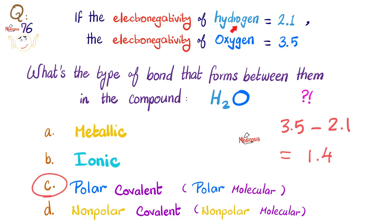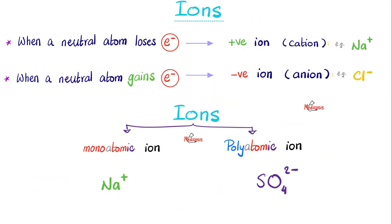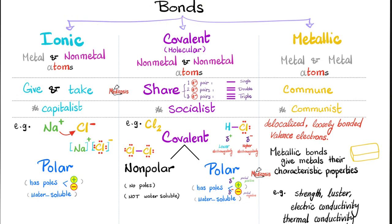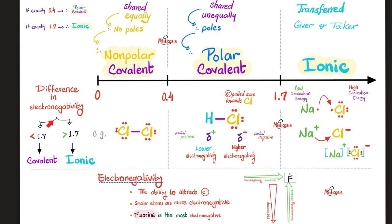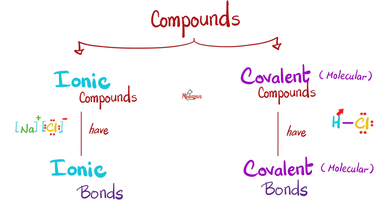Water is polar because the ability of oxygen to pull electrons towards it exceeds that of hydrogen, creating poles. When you lose a negative electron, you become a positive ion; when you gain one, you become a negative ion. Covalent compounds can be nonpolar or polar, but ionic compounds are always polar. Nonpolar covalent: delta 0–0.4; polar covalent: 0.4–1.7; ionic: 1.7 or higher.